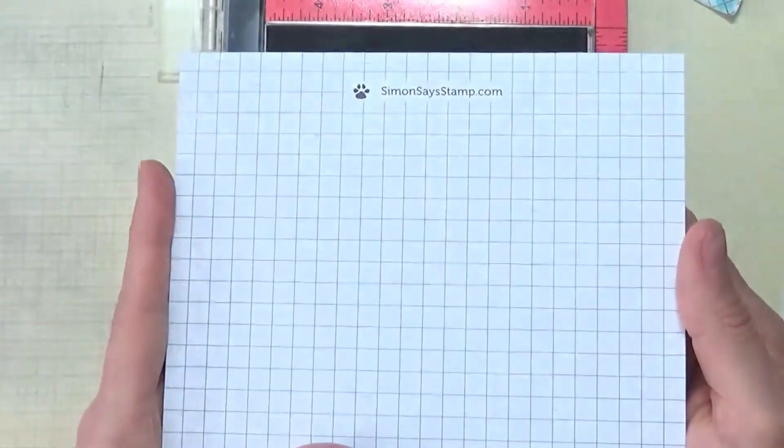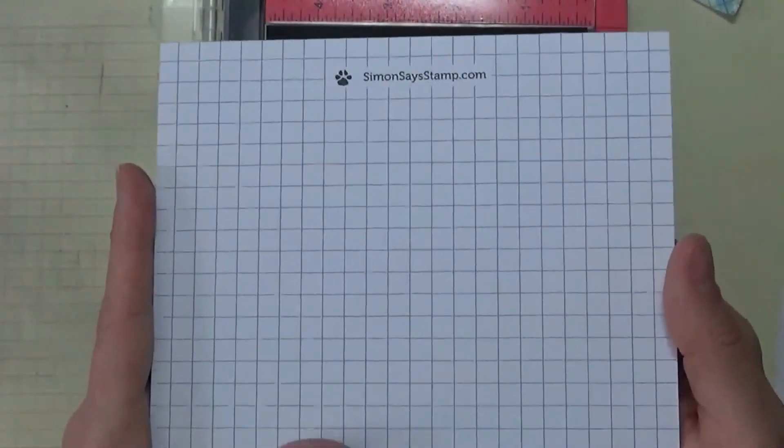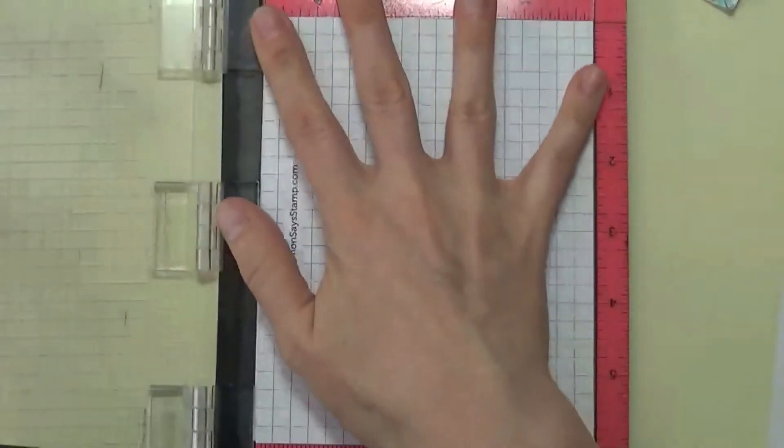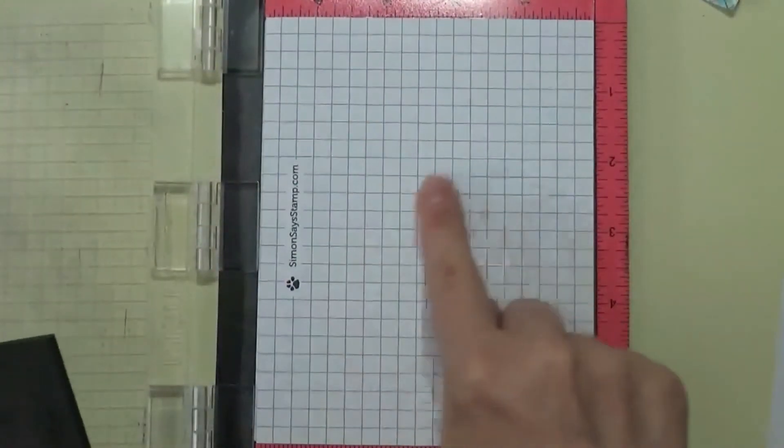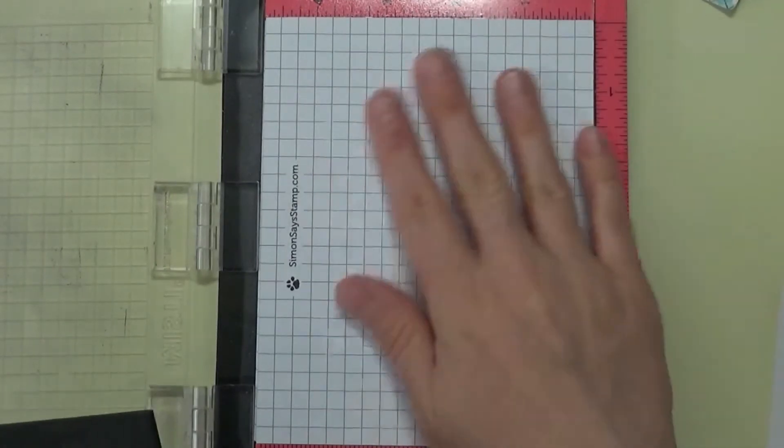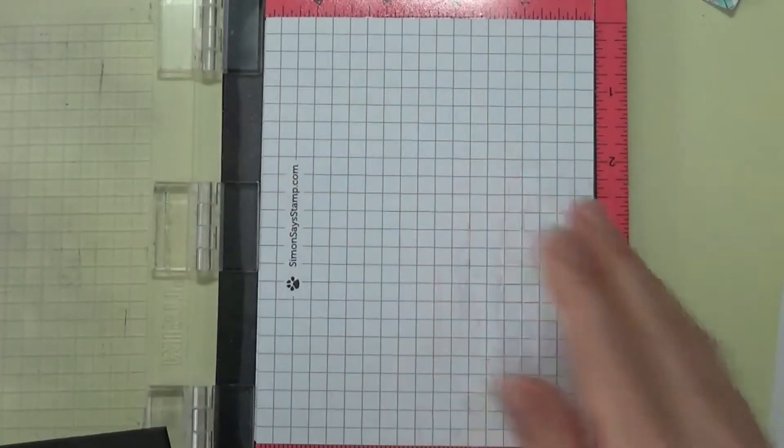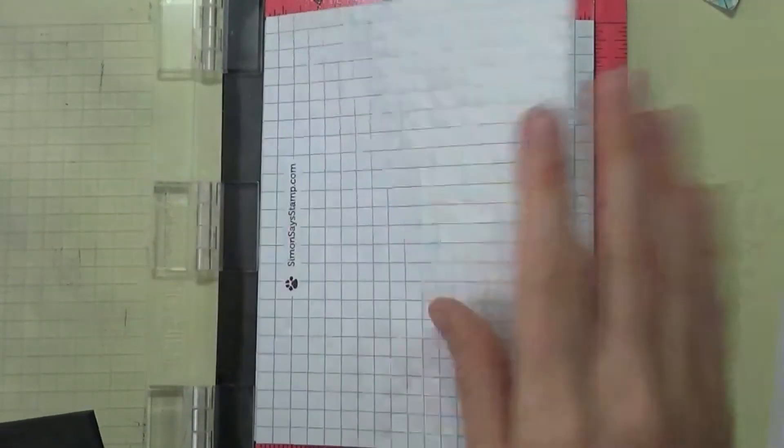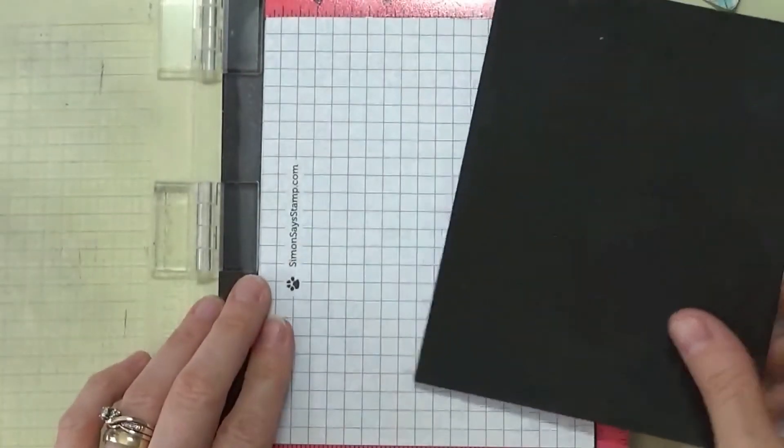Another great product is this one here from Simon Says Stamp. Basically this is a refill for the pad that this comes with, and it just inserts in here. And again, a lot of people like to use this grid to line up if you don't have this transparency. This really helps to line your stamps up as well. And if you get ink on it, then you can just tear a sheet out and continue on the pad. So really like that product as well.